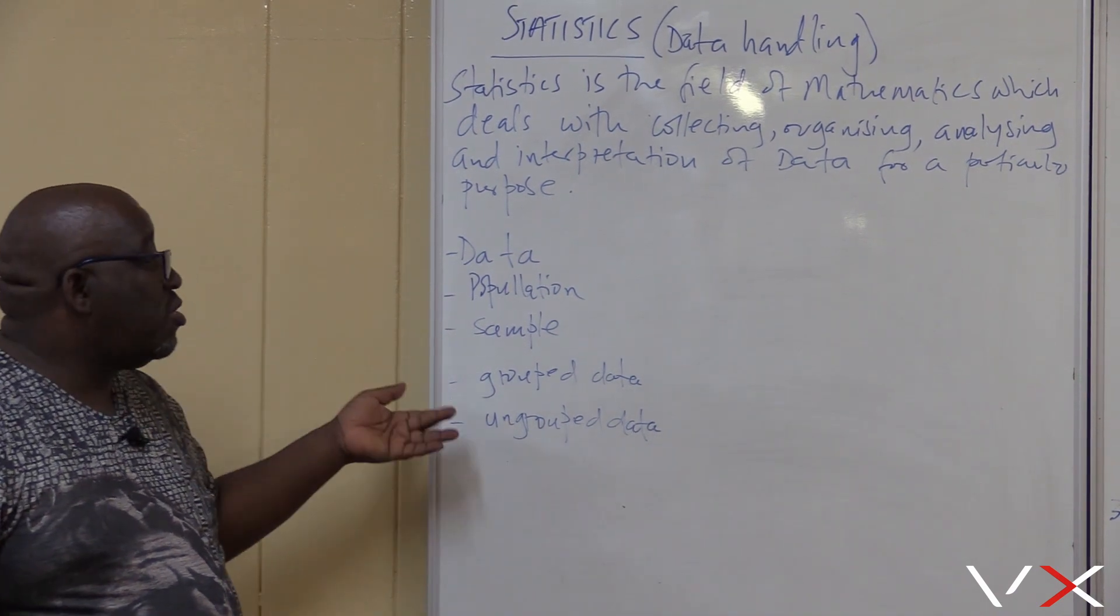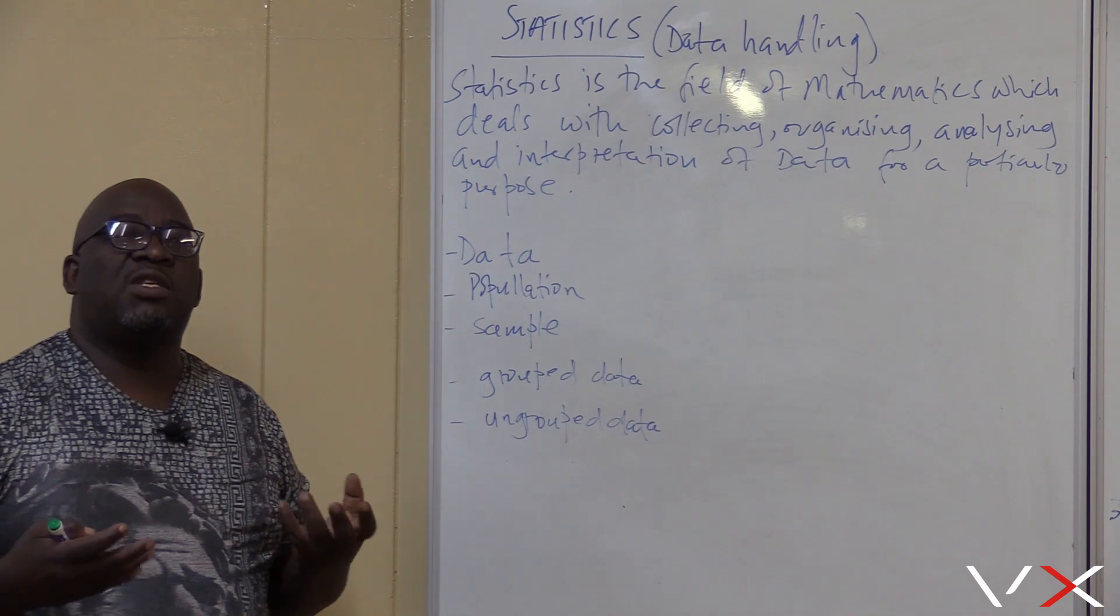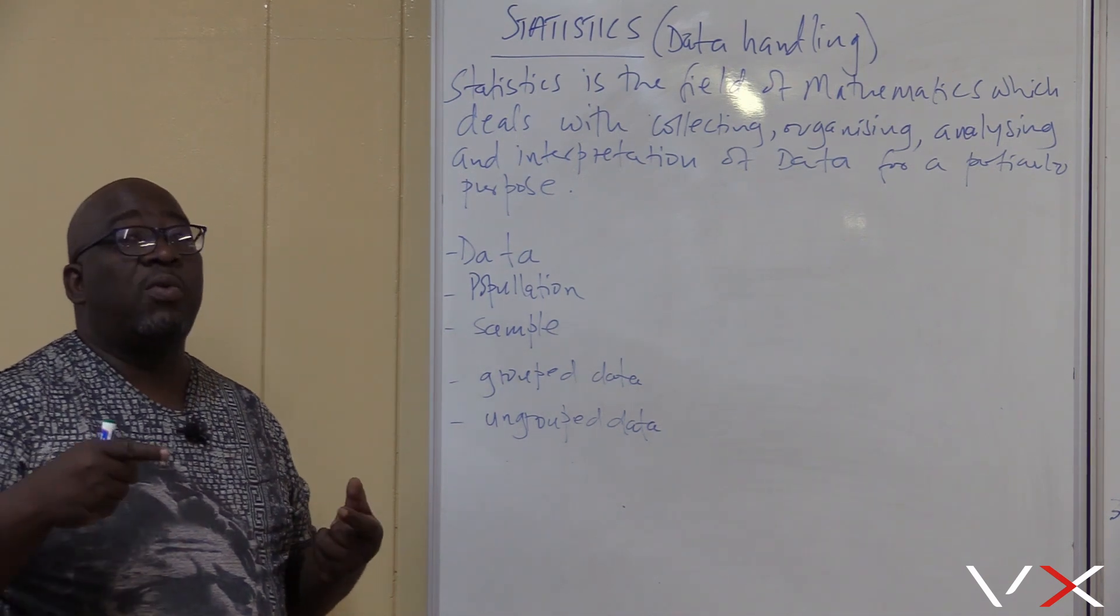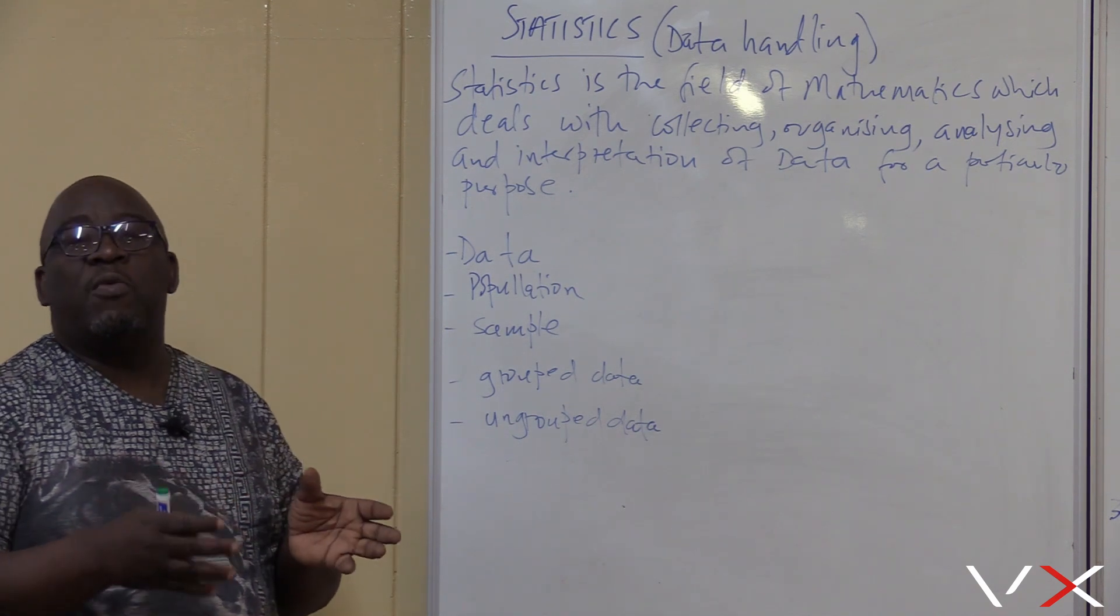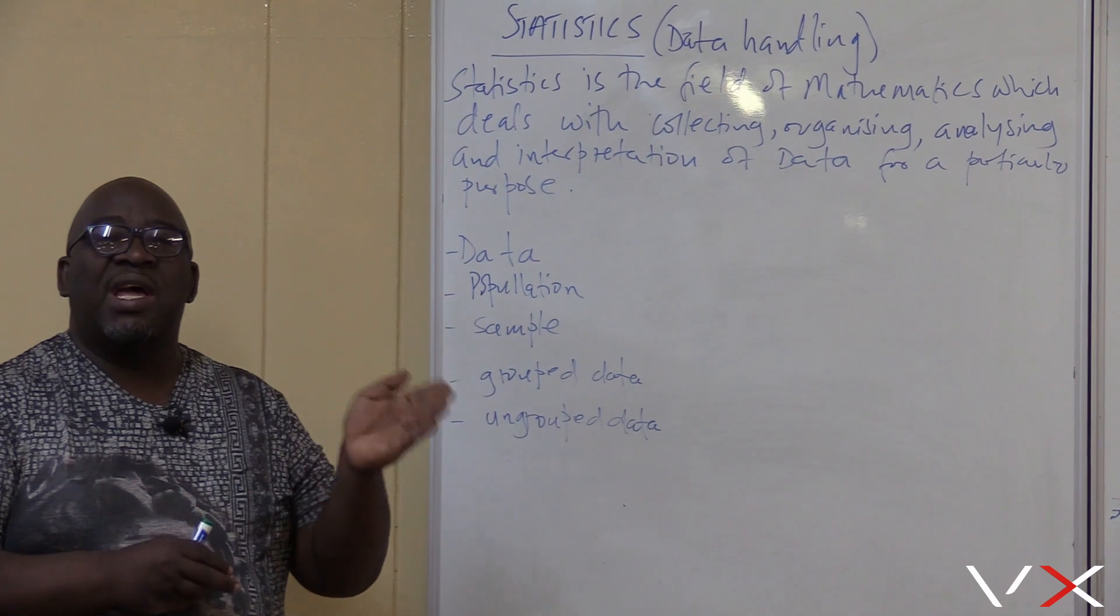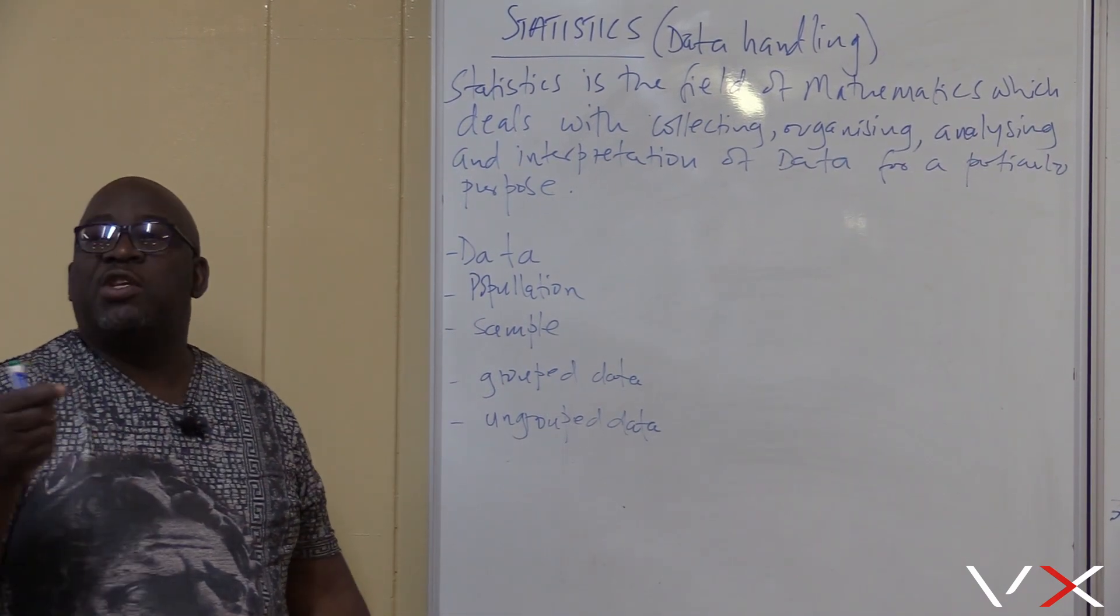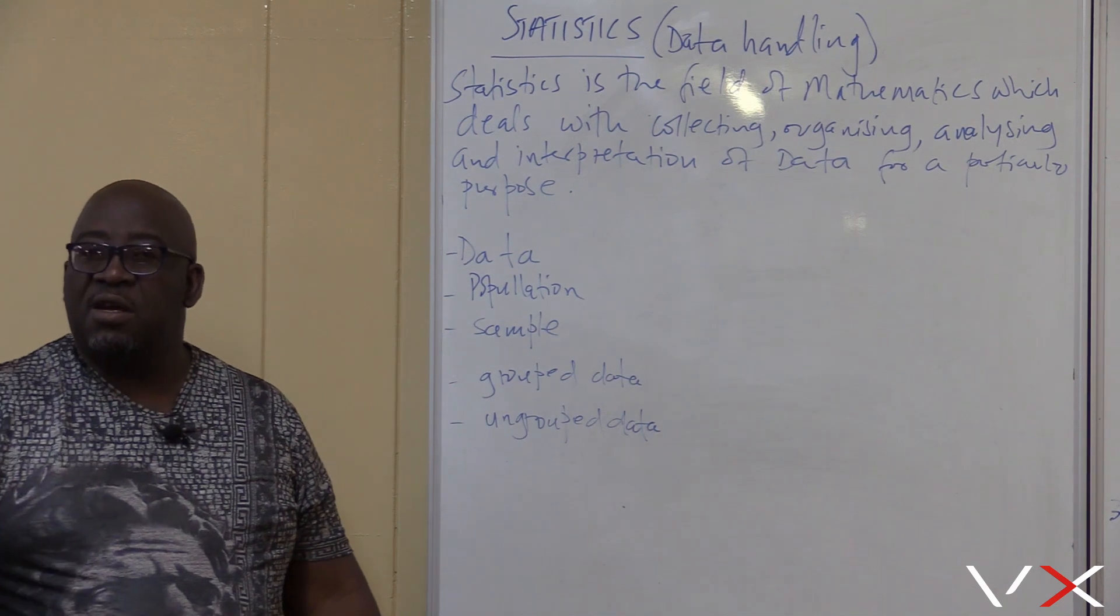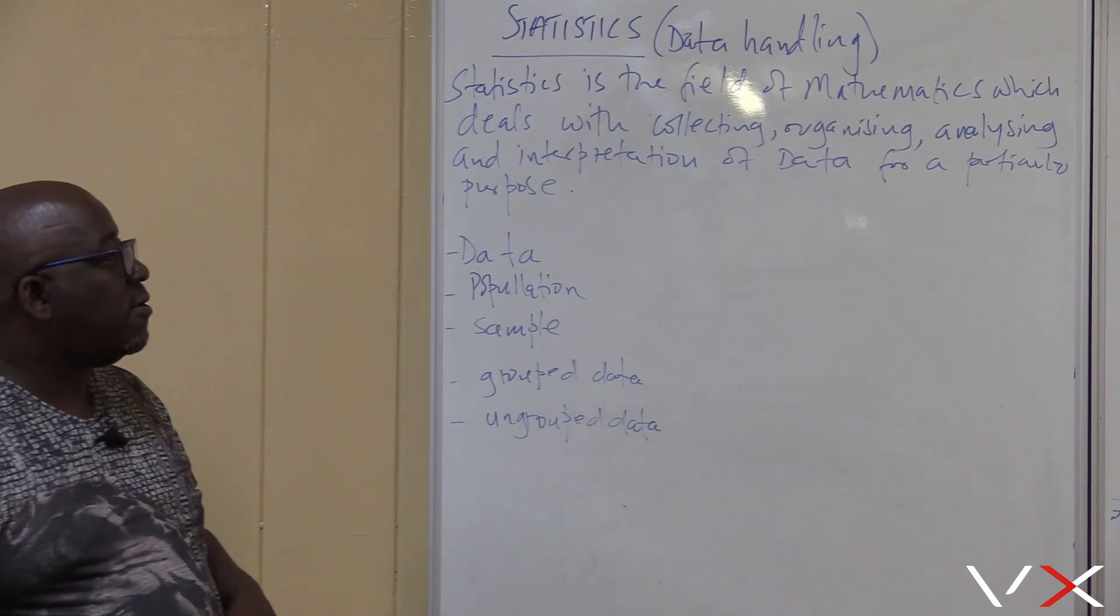In this section, we'll be dealing with both grouped and ungrouped data. By grouped data, it's where we'll be doing our graphs, like histograms and bar graphs, where we group our information. Suppose we say people from ages between 10 and 20, that's grouped data. But when I say the ages of learners is 20, 30, 40, 15, so that's not grouped data.